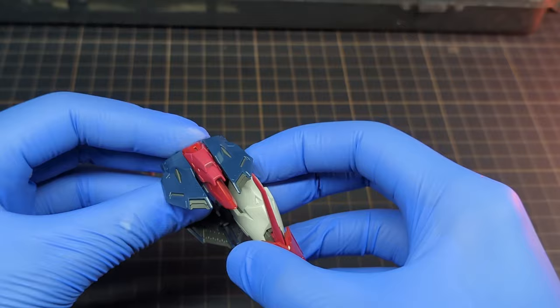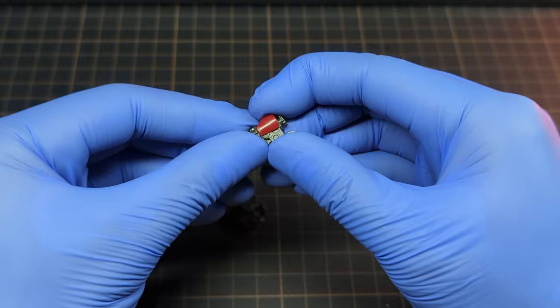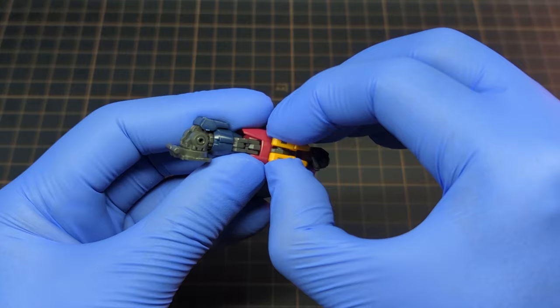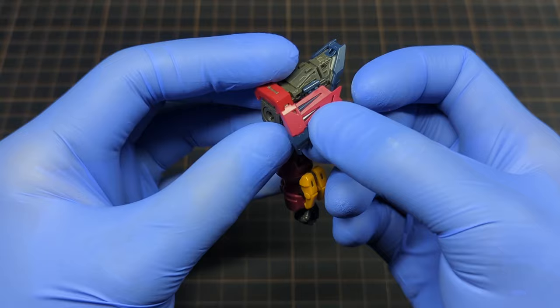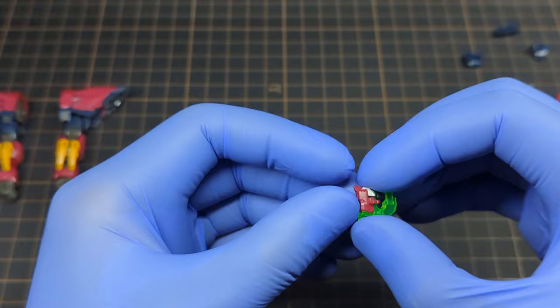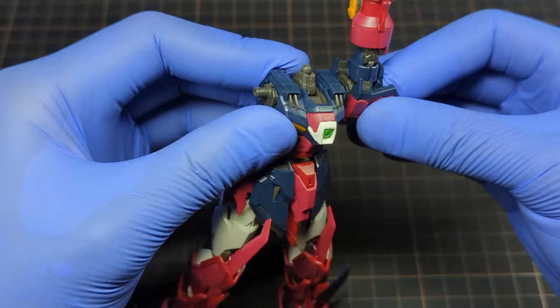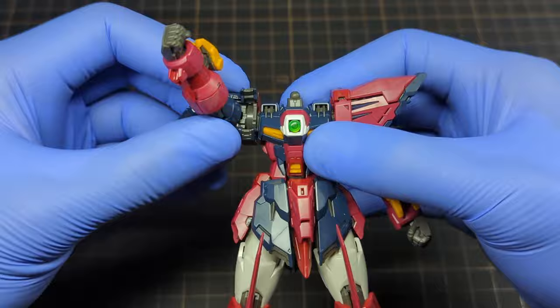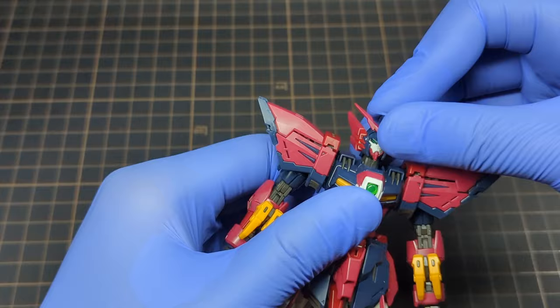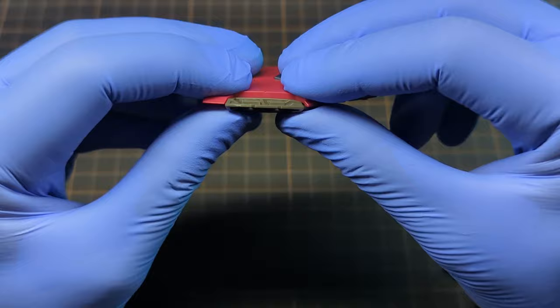So the main idea for this build concept was, what if the second mobile suit with a zero system was the second Unicorn unit with the NTD mode, which stands for New Type Destroyer. But not only that, an upgraded Banshee with wings and a tail. Unicorn Phenex are not the only ones that can have a tail - I know they're not technically tails, but moving on.